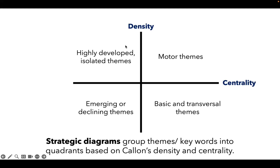On the left upper quadrant side, you see themes that are highly developed or highly specialized, but they might be isolated or peripheral to that theme — so they might not have much importance to the field, but they're very specialized with a lot of depth. In the lower left quadrant, which has low centrality and low density, the themes are both weakly developed and of marginal importance, and they might represent either emerging or disappearing themes.